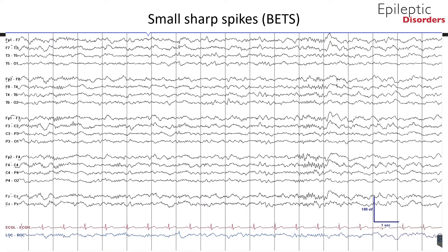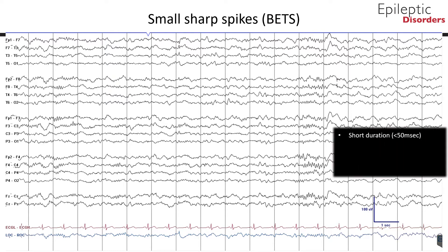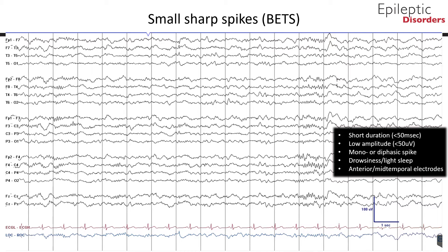Small sharp spikes, also known as benign epileptiform transients of sleep, are short in duration — less than 50 milliseconds — and low in amplitude, less than 50 microvolts. The shape is rather simple and consists of a mono- or diphasic spike with a steep descending arm, and an aftergoing slow wave is not prominent and usually is lower in amplitude than the spike component. The background activity at the region of the small sharp spike is not disrupted. These discharges are best seen in drowsiness and light sleep, and are best displayed over the anterior and mid-temporal or ear electrodes. They are mainly seen in adults. Small sharp spikes are not thought to be related to any certain disease, and are accepted as a variant of normal EEG activity.